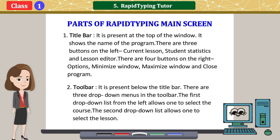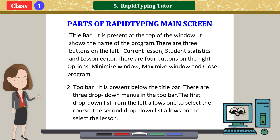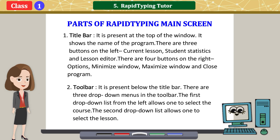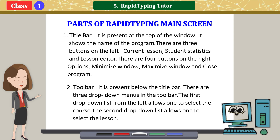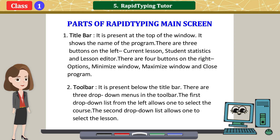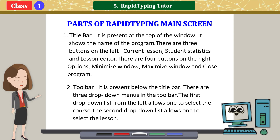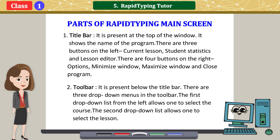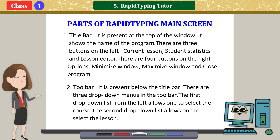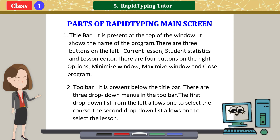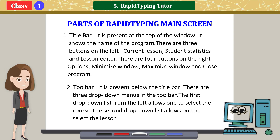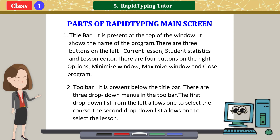2. Toolbar: It is present below the title bar. There are three drop-down menus in the toolbar. The first drop-down list from the left allows one to select the course. The second drop-down list allows one to select the lesson.